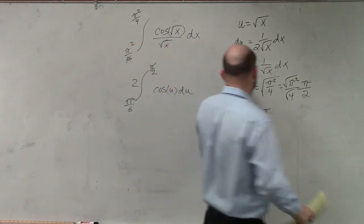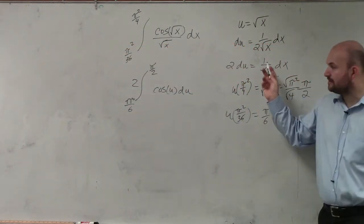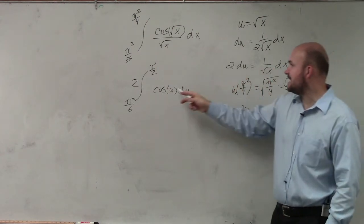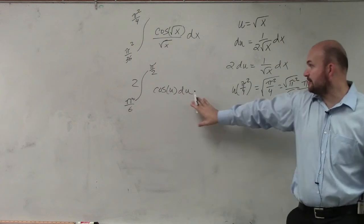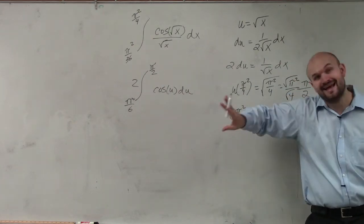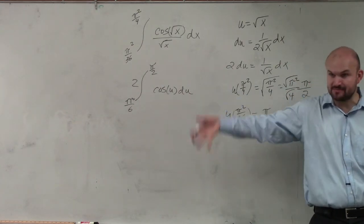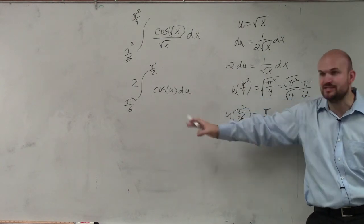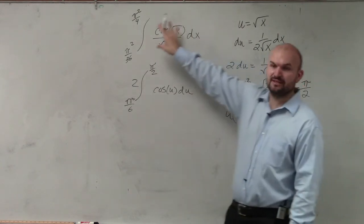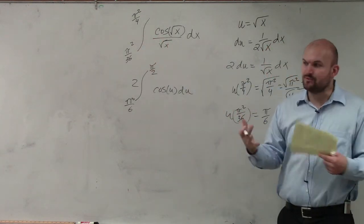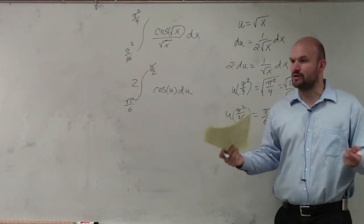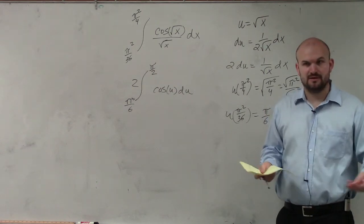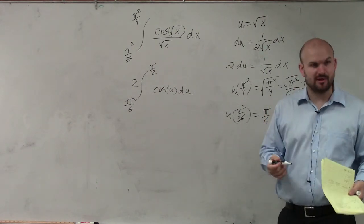Remember, my du is basically represented here — divided by the square root of x, dx — and then times 2, which I threw on the outside. So at this point, everything has been covered. I've changed my upper and lower bounds in terms of u, and cosine of u and du covers everything. Once you get to that point, that's your check mark — stop and make sure everything is covered before moving into the integration part.